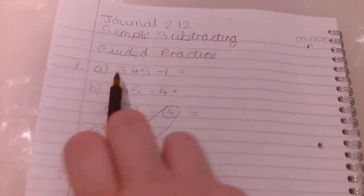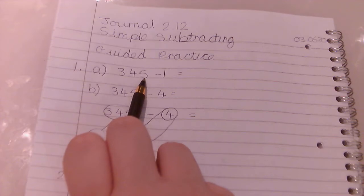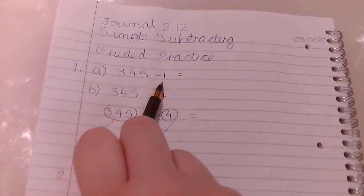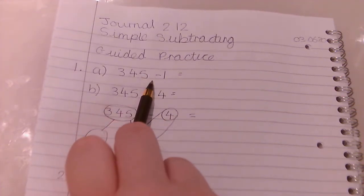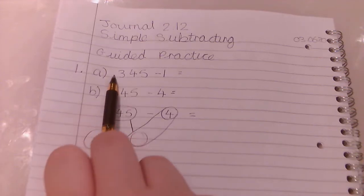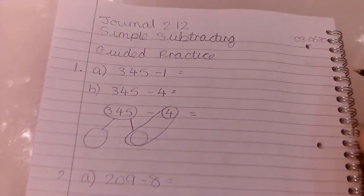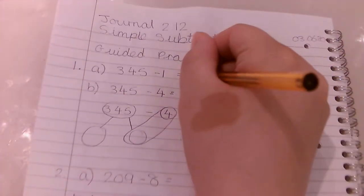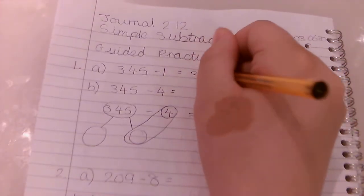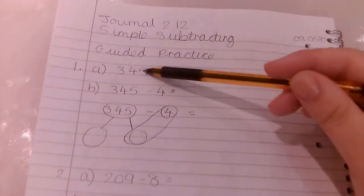So the first question says 345 take away 1. Now take away or subtract 1 just means what number comes before 345. So we know the number before 345 is going to be 344. Any number that ends in 5, the one before is going to be a 4.